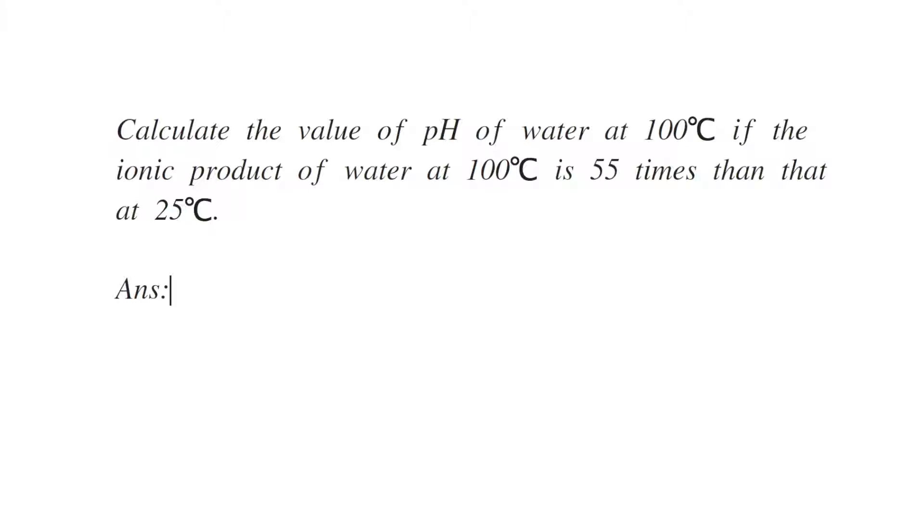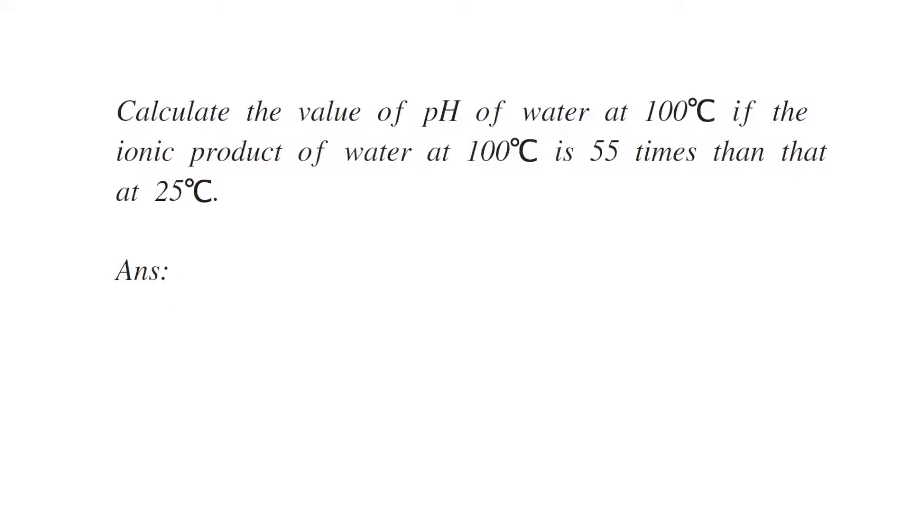Calculate the value of pH of water at 100 degrees Celsius if the ionic product of water at 100 degrees Celsius is 55 times more than that at 25 degrees Celsius.